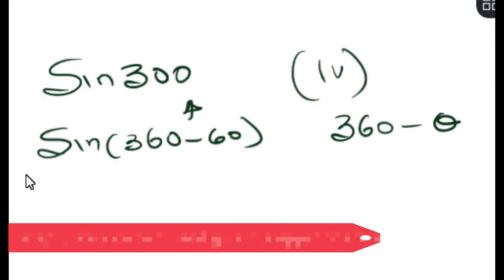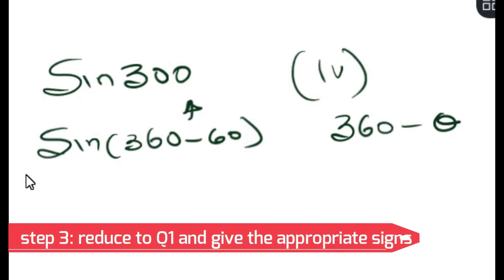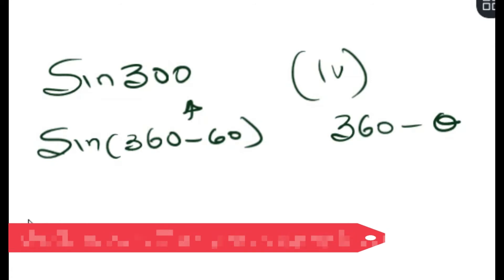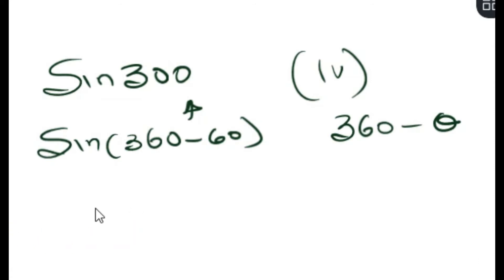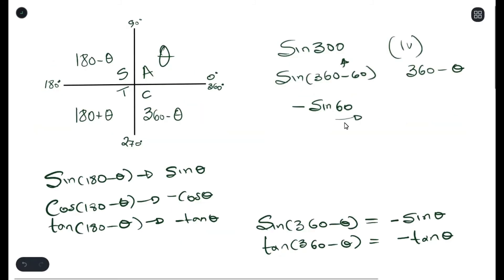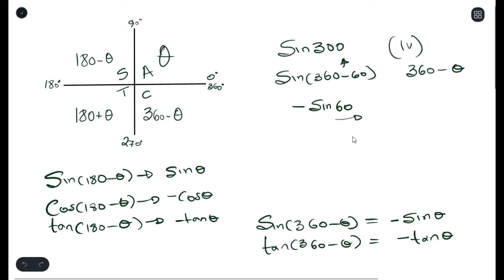The final step is to determine whether it's positive or negative. Since sine is negative in the fourth quadrant, this becomes negative sine 60 degrees, and that is your final answer. If there's a possibility of simplifying sine 60 you can do that, or else just leave it as is. Let's try one more example.